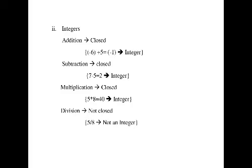In multiplication also, integers are closed under multiplication. For example, 5 into 8 equals 40 — the numbers 5, 8, and 40 are all integers. In division, integers are not closed under division. For example, 5 divided by 8 is not an integer value.